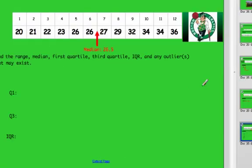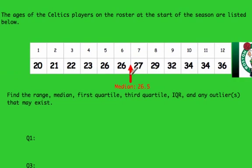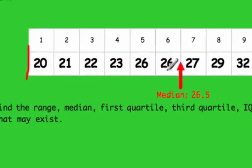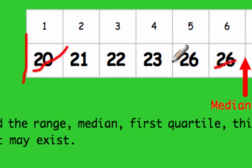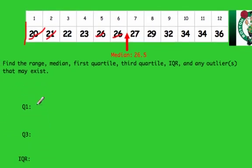Now that we know the median is 26.5, the next step is to find the first quartile by looking at everything from the median to the beginning of the data set. There are six values in that lower half, and we include the 26 because the median was actually 26.5 — a little higher. Crossing off values to find the middle of that group, we get two numbers in the middle, giving us Q1 = 22.5 years of age.